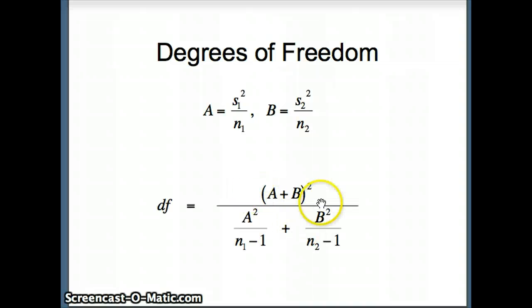The degrees of freedom then will be (a + b)² divided by a² over (n₁ - 1) plus b² over (n₂ - 1). The degrees of freedom we will get will typically have a decimal in it, and we will just round down. So whatever degrees of freedom we get, we will round down before we determine our p-value.